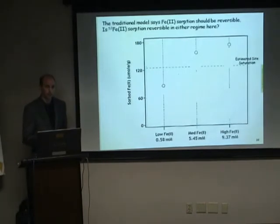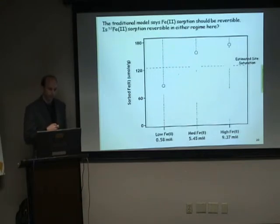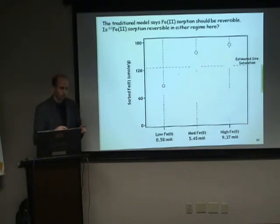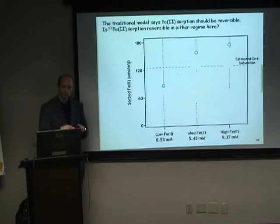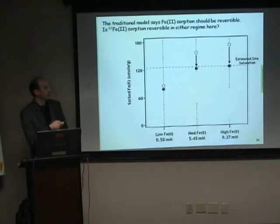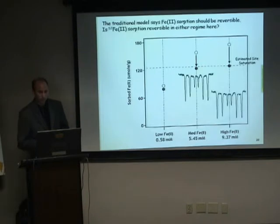We wanted to look at another assumption inherent in a lot of these sorption models — that there should be an equilibrium process. When a metal cation is driven to a surface and sorbed, it should be able to desorb when the driving force is removed. We made data points from our sorption isotherms — one below site saturation and a couple above — filtered the oxide solids, and resuspended them in deionized water. Virtually no Fe2+ desorbed for the point below site saturation; for those above, enough Fe2+ desorbed to bring it down to site saturation. Spectra confirmed there was no Fe2+ on the surface below saturation — just all hematite.